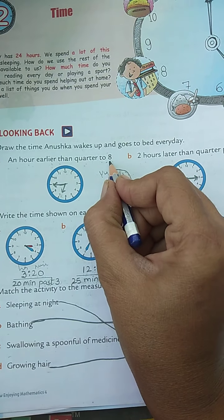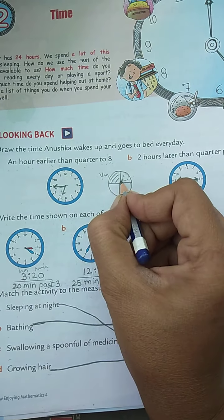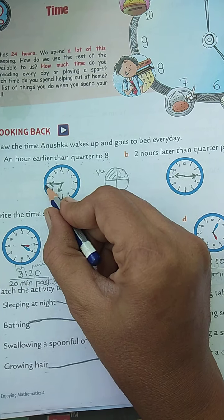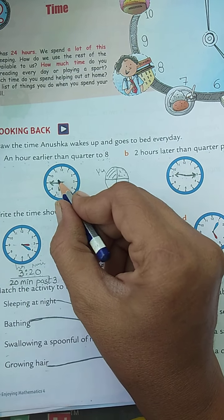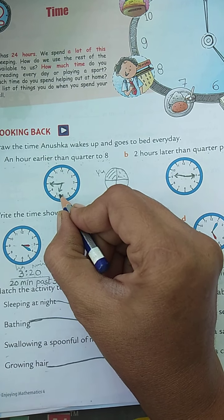So big hand first we will keep on nine as it is quarter to, right? And the small hand will be near seven, not exactly on seven, before seven.